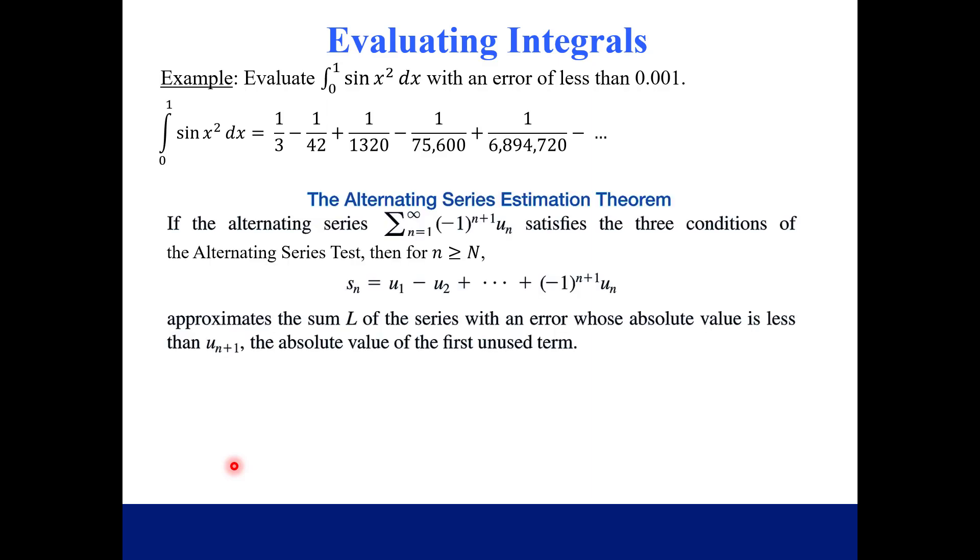We learned this estimation theorem a few sections back when we were learning about alternating series. Notice that we are working with an alternating series. We have a positive term, and then minus a term, and then plus, minus, plus, minus. So we can use this theorem. What this theorem basically says is if you want to figure out what this series equals, will you just stop adding somewhere along the way? Your entire series equals that partial sum, within an error of the next term.